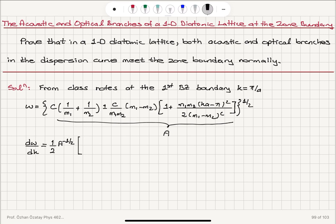So we have ±C(m₁ - m₂)/(m₁m₂) multiplied by m₁m₂/[2(m₁ - m₂)²].